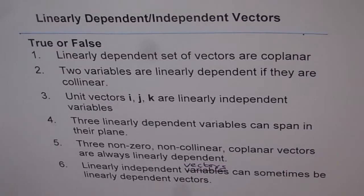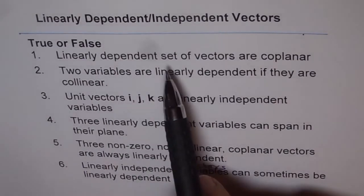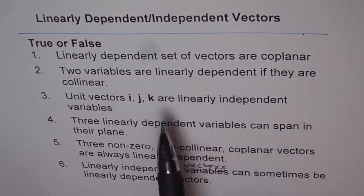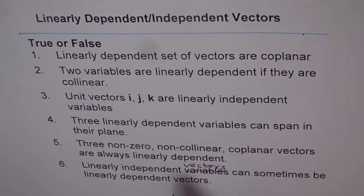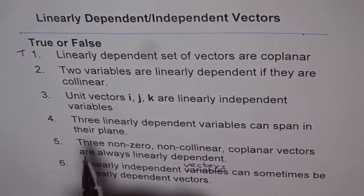Now let's go through the solutions. Question 1: Linearly dependent set of vectors are coplanar — that is absolutely true. If they are not in the same plane, then you cannot write one in terms of another. Linearly dependent means you can represent one vector in terms of another. If there are two vectors, they are related by a scalar multiple. If there are three vectors, the combination of two can give you the third one, and that can only happen if they are coplanar.